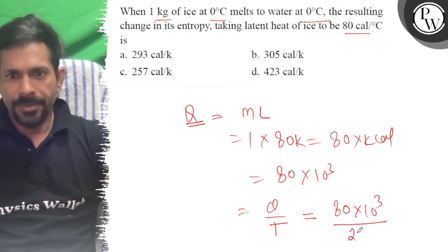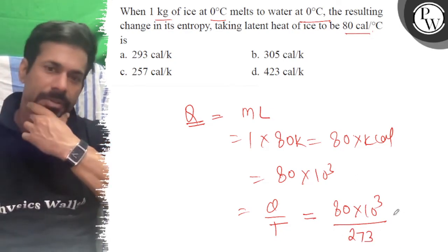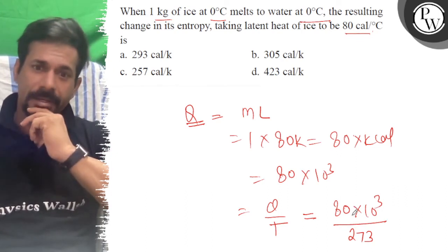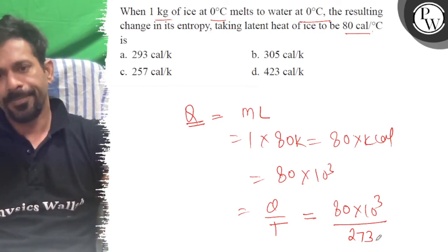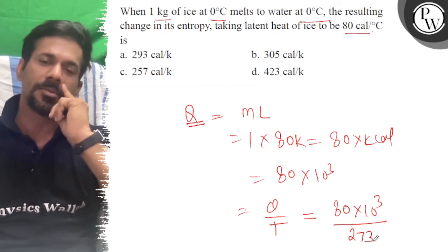So dividing by 273, let's calculate this. If we carry over here, it should come around 300 something, because 80 divided by 273, if we multiply by 10³, it should be around that.